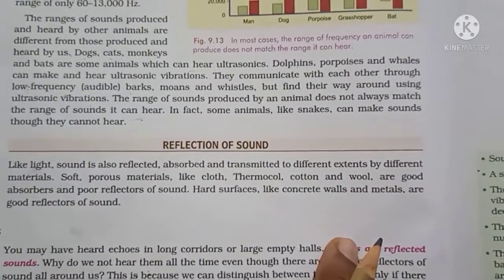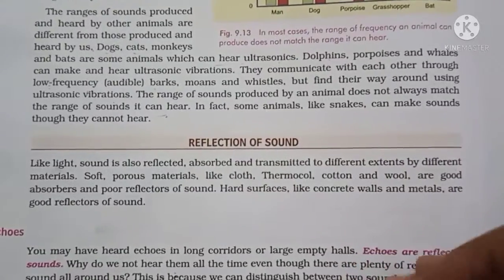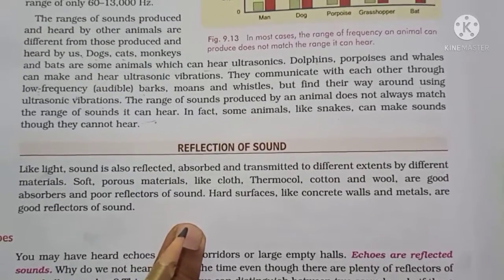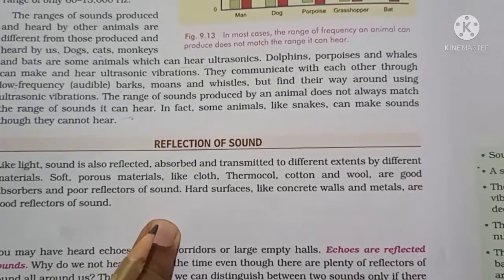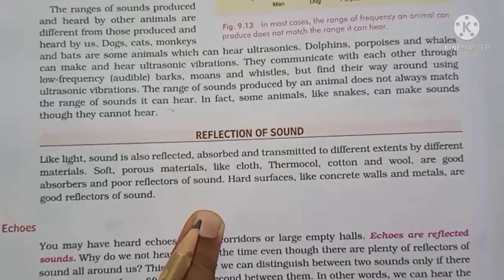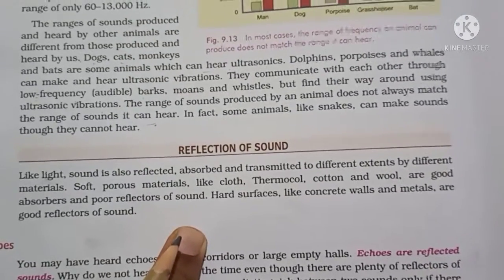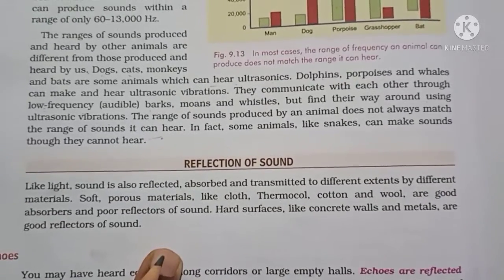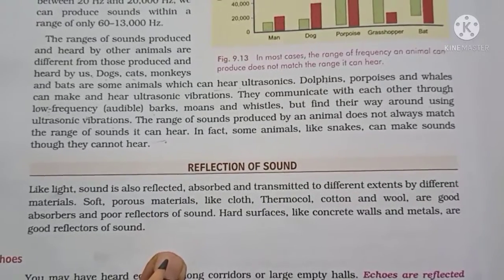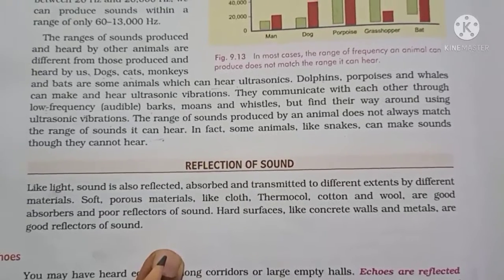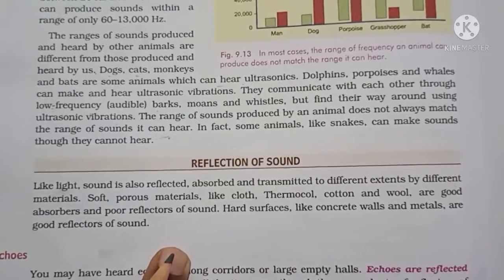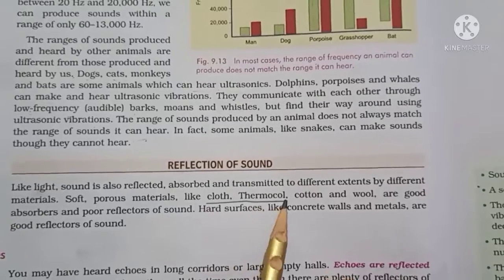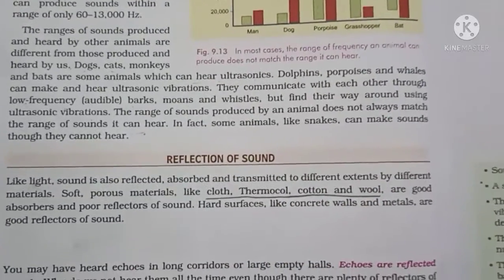As light can be reflected, in the same way sounds can also be reflected, absorbed, and transmitted to different extents by different materials. All those materials that are soft and porous — like cloth, thermocol, cotton, and wool — are good absorbers of sound and poor reflectors of sound. Where we want to decrease the reflection of sound in big halls or auditoriums, we use cloth, thermocol, cotton, and wool to reduce the reflection of sound.